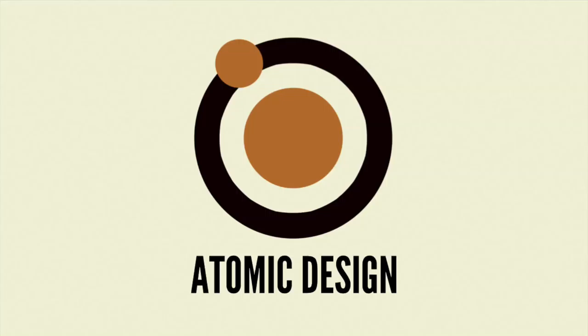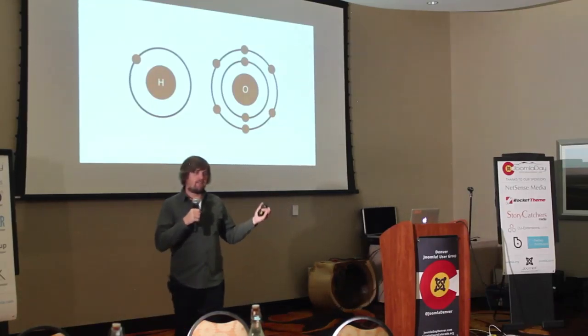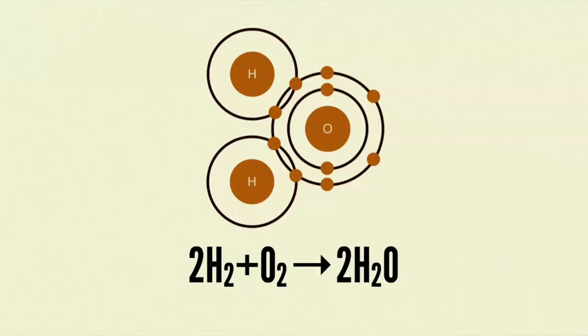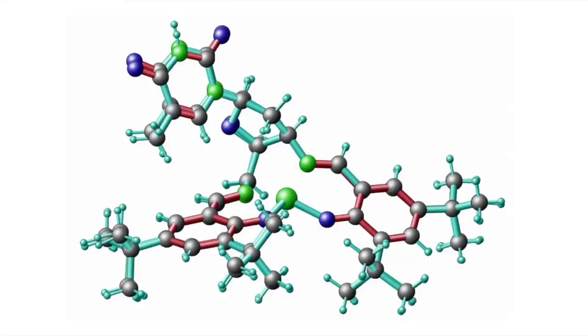That's what I call Atomic Design. In the natural world, we have atoms — hydrogen atom, oxygen atom — the basic building blocks of all matter. They have their own properties but are also an abstract concept; you don't see them floating around by themselves in nature. But those atoms combine together to form molecules, like water molecules — two hydrogen atoms, one oxygen atom — and suddenly that takes on its own properties as a useful component. Those molecules keep combining to form more complex molecules, which keep combining to form organisms, which keep combining to form more complex organisms like a person.